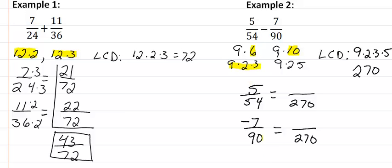And so I'm missing the factor of 5. So that means I'm going to multiply this by 5, giving me 25.